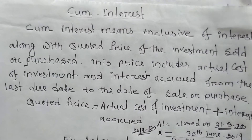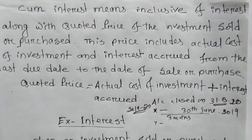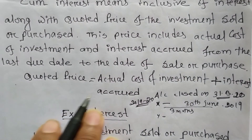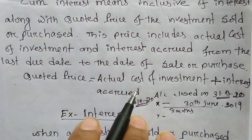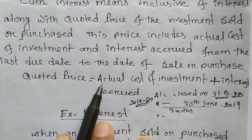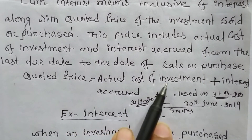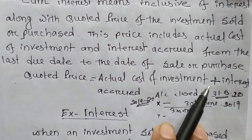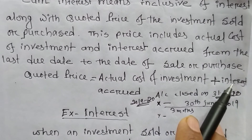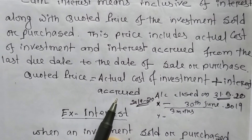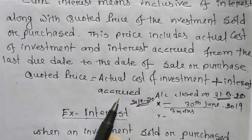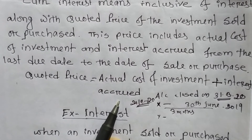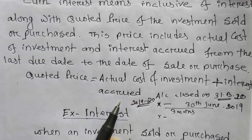Here you have to know one thing: quoted price equals actual cost of investment plus interest accrued. Accrued means interest earned but not yet received.